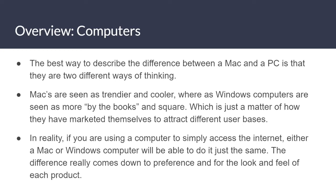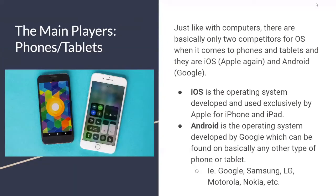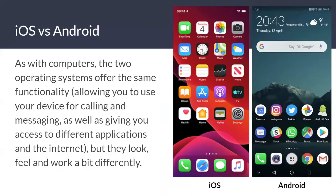In reality, if you're using a computer to simply access the internet, both will do the same and both are a fine option. The difference really comes down to preference and the look and feel of each product. For phones, the only two competitors for the OS are Apple and Android, which is owned by Google. iOS is the operating system developed and used exclusively by Apple for iPhone and iPad. Android is an operating system developed by Google, found on basically any other device that's not an iPhone — Google Pixel, Samsung, LG, Motorola, Nokia, etc.